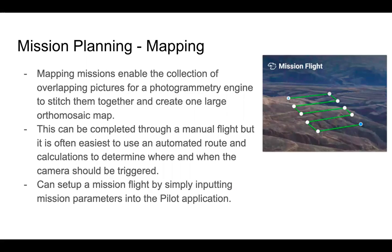By taking overlapping photos, we're able to stitch them together in a photogrammetry software. If there's a tree in one image and a tree in another image, the tree connects those two images and allows the photogrammetry engine to stitch them together. You could technically do this in a manual flight, but you get better results through automated flights taking pictures at set intervals.